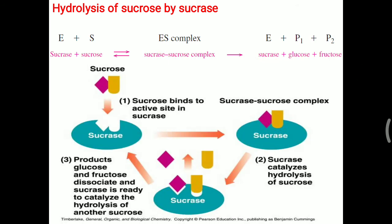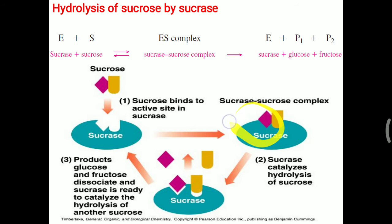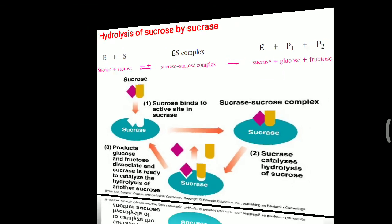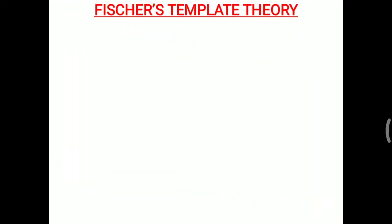The same thing is shown in the diagram: sucrase is attached to sucrose, which is a disaccharide made up of glucose and fructose. The ES complex is generated, and from that ES complex, the final products — glucose and fructose — are generated. That is Michaelis-Menten theory.